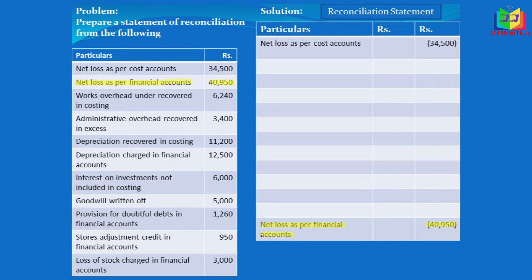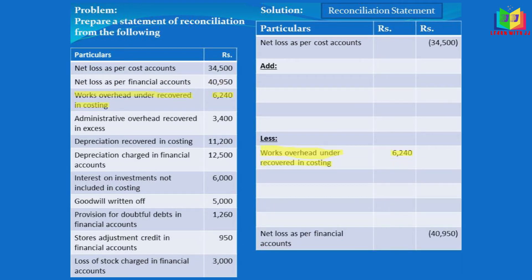The next step is to write net loss as per financial account — ultimately we're going to arrive at 40,950. The next item is works overhead under-recovered in costing. It is clearly mentioned that it is under-recovered, so expenses are understated in the cost book. This will increase the profit, so in order to rectify that we have to subtract it — writing it in the subtraction (less) column.